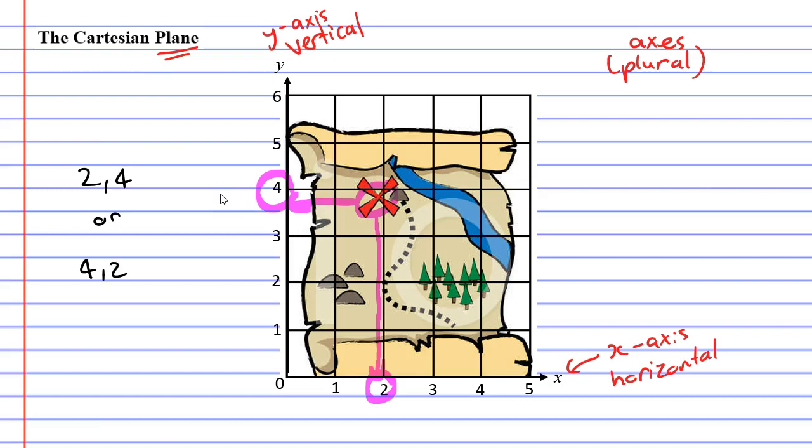When you write these coordinates down, you put a comma between the numbers and brackets around them. If you remember from the previous map, we always do horizontal first and vertical second. So we go 2 first, then 4. This is the correct one: (2,4). The coordinate (4,2) would be incorrect when describing the location of X.